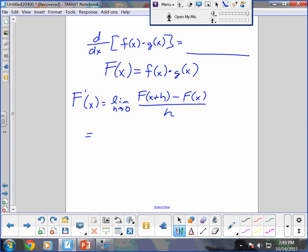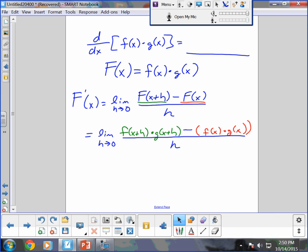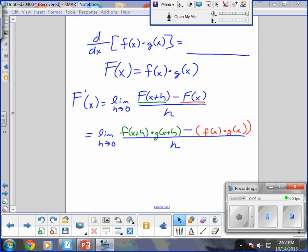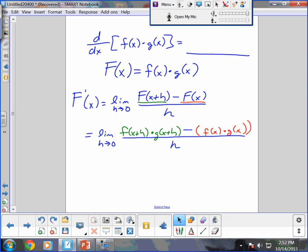Now this gets ugly again. Equals limit as h goes to zero. Function notation. I'll do this in green so you can see it coming out. F of x plus h times g of x plus h minus, and I'll do this in red, F of x times g of x. It's still all over h. There's nothing to expand, there's nothing to factor. Do you guys see it? It's kind of a disaster.